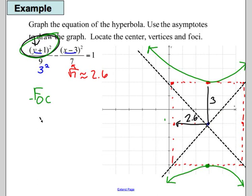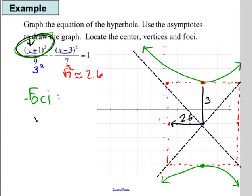Now to find the foci, I'm going to add 9 plus 7 to get 16. That's the value for c squared. So c is 4. So remember that's a distance. It doesn't mean the value of 4. It means the distance of 4. So I'm going to go 4 above and below my center.